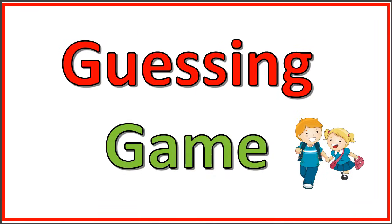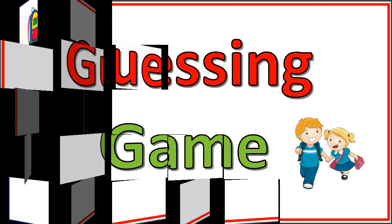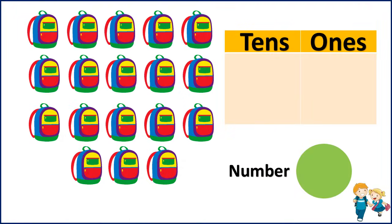Now let's play a guessing game! I'll be showing you some sets of objects. You have to group them as 10, find the 10s value and 1s value, and also try to find the number. I'll give you about 5 to 10 seconds, and if possible you can pause the video and try to find it out. Let's get started!